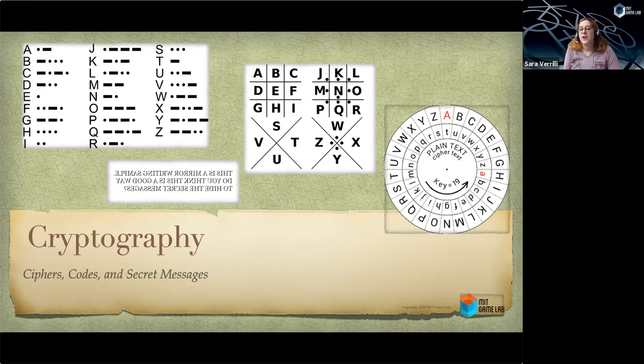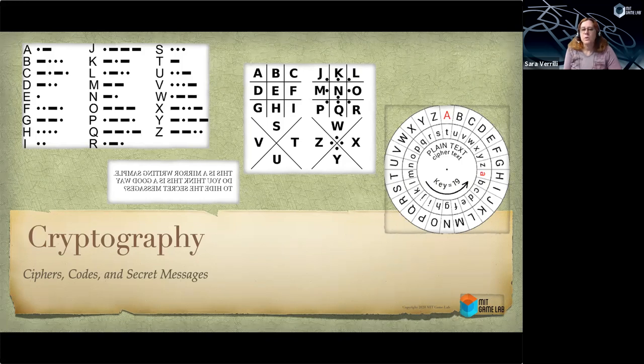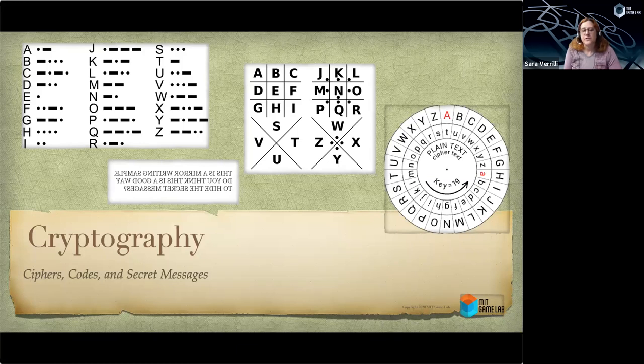Here I have just a set of fairly common ciphers: Morse code, pigpen, and an old classic going back to Roman times, the Caesar cipher. Caesar cipher is a simple letter substitution algorithm, and it depends on having a numerical key, usually between 1 and 26. If your key is 19, for example, to encode an A, you count 19 letters into the alphabet and write down a T.